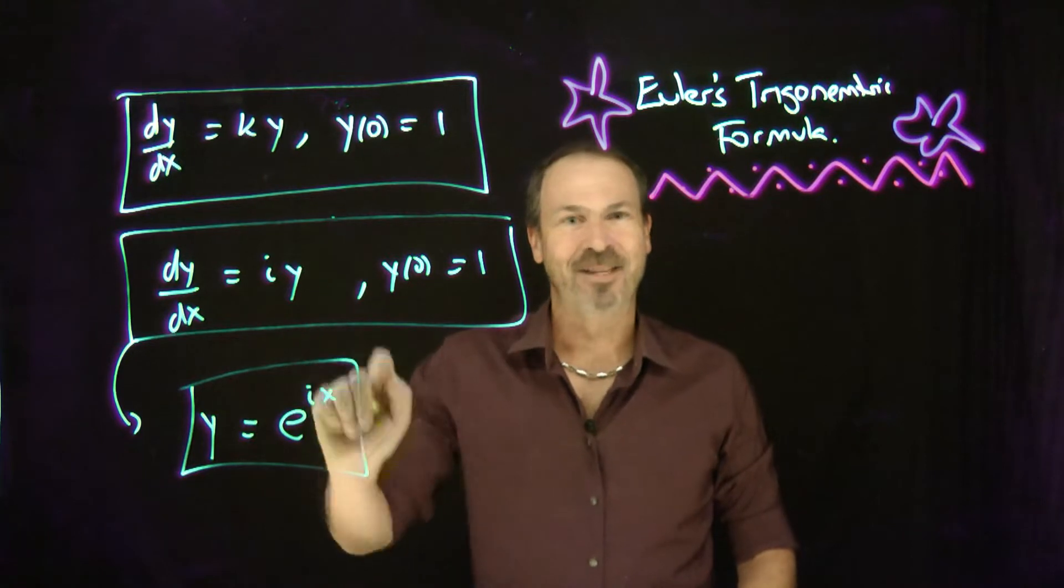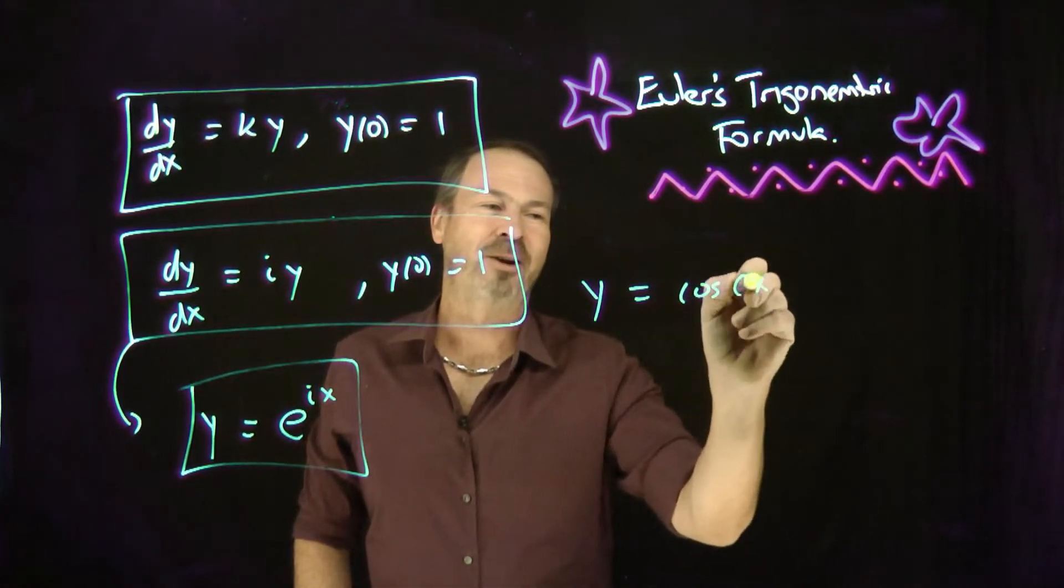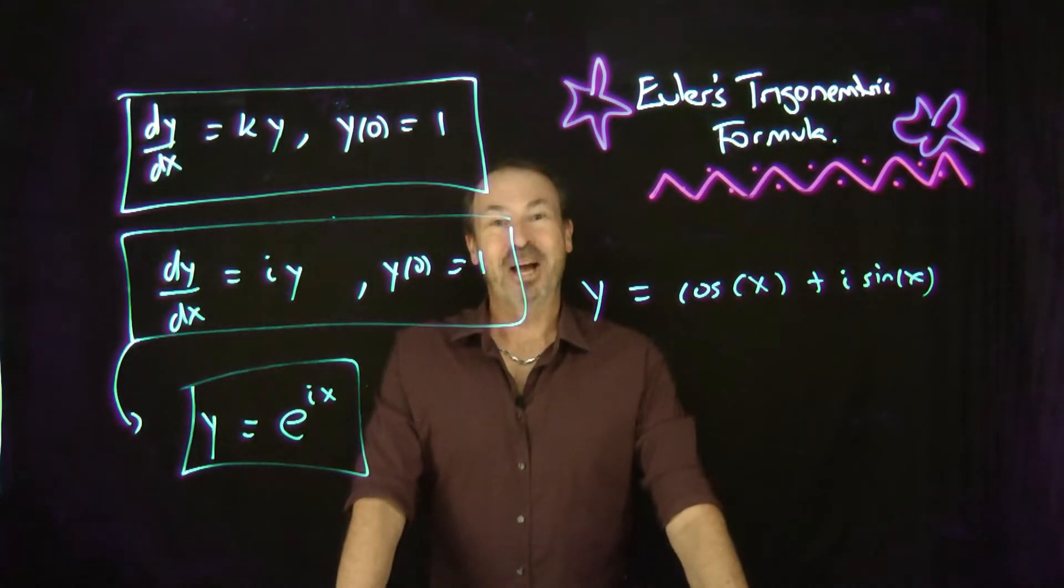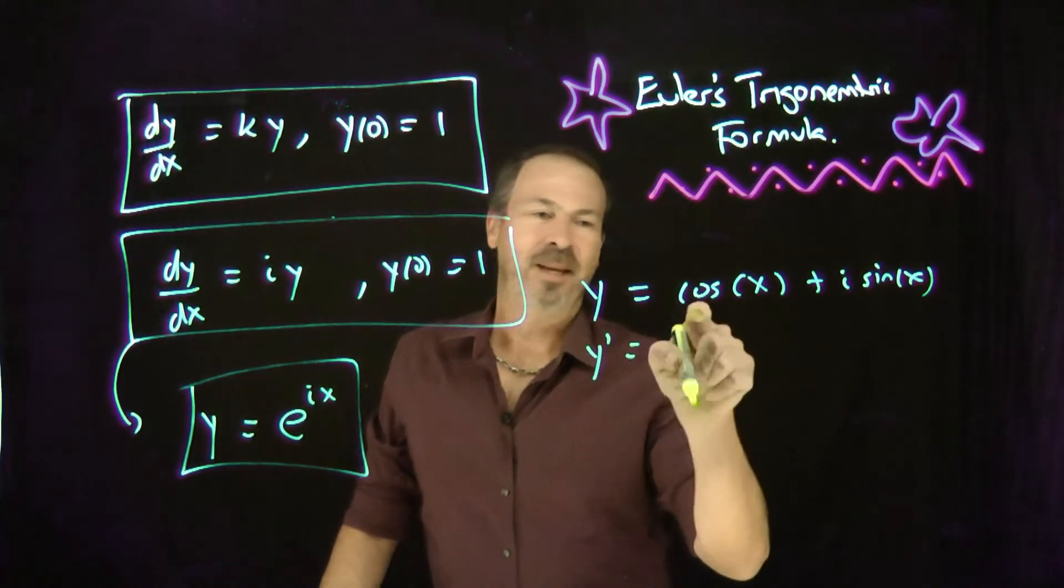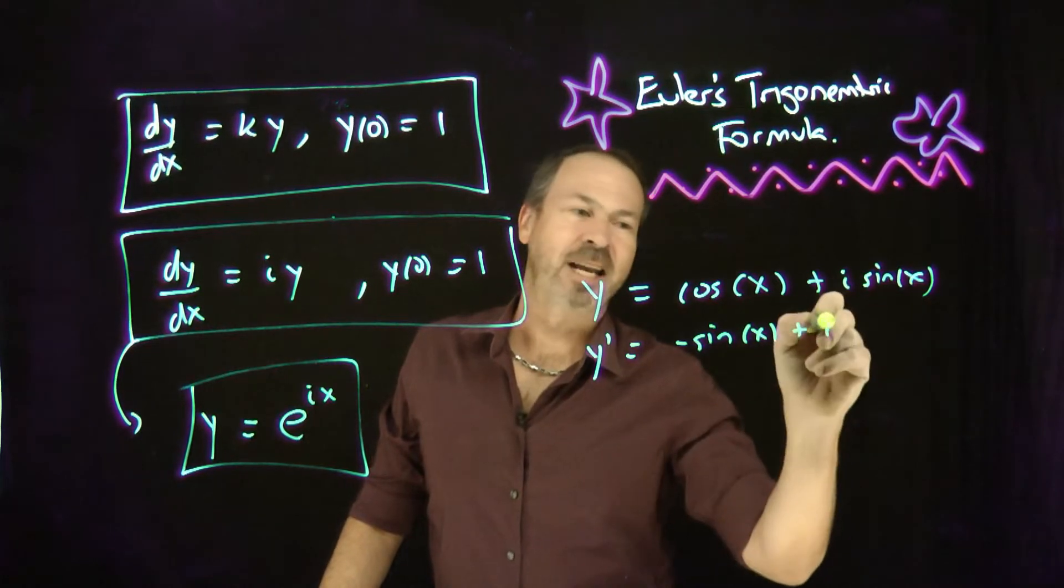But he said, there's actually another solution to that one. Look at this. What if I told you, thought about y equals cos x plus i sine of x. Look at that. That's kind of cool. I claim it fits this equation. Take its derivative. The derivative of cos x is negative sine of x, plus i times the derivative of sine x, cos of x.